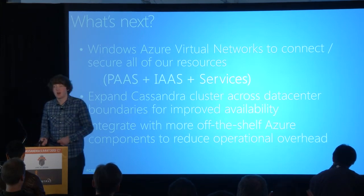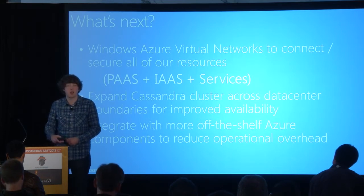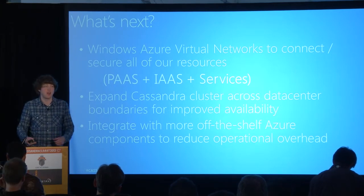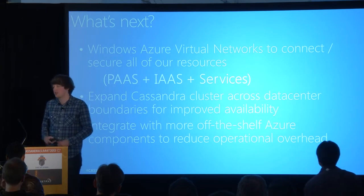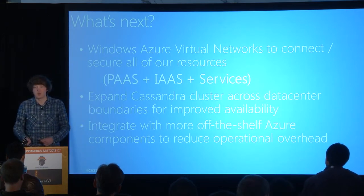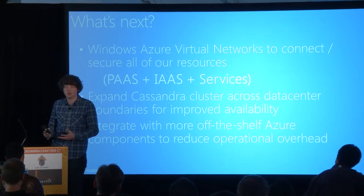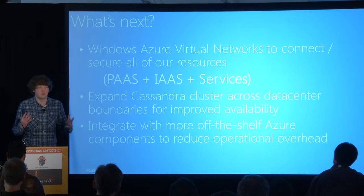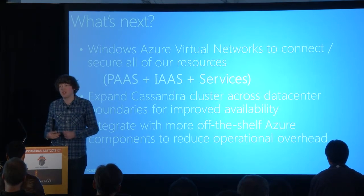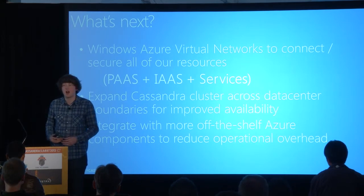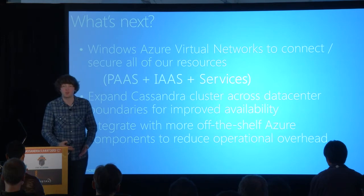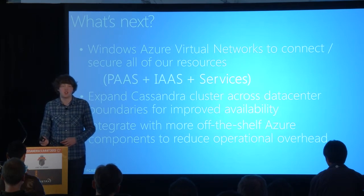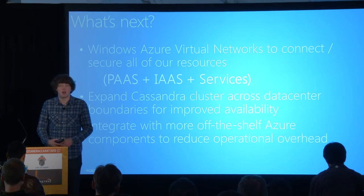The other big thing we want to do is expand our Cassandra cluster to be across different regions. We have fault domains, which is easy to do in Azure to have your Cassandra cluster span that. It's a little more complicated to have it span across regions, which is something you'll always see in the public cloud. Additionally, we want to continue moving components of our application off of our homegrown capabilities onto platform services as much as possible. All told, Metrics Hub has something like 30 open source components and over 15 third-party SaaS offerings — part of our big focus to build as little as possible that's not essential to our business.